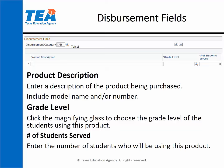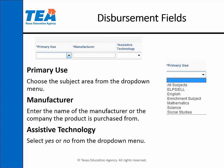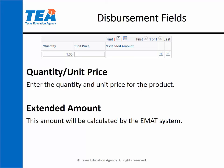For grade level, click on the magnifying glass to choose the grade level of the students using this product. Then enter the number of students who will be using this product in the number of students served field. For primary use, choose the subject area from the drop-down menu. For manufacturer, enter the name of the manufacturer or the company the product is purchased from. For assistive technology, select yes or no from the drop-down menu. For quantity and unit price, enter the quantity and unit price of the product. The extended amount will be calculated for you.